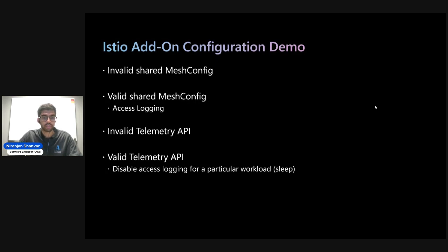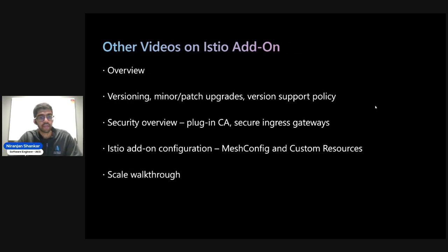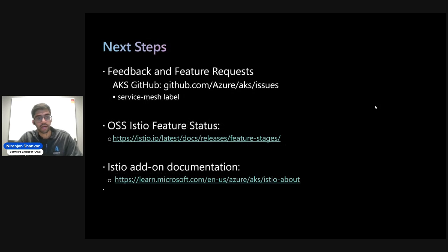That wraps up the quick demo and this video on Istio add-on mesh customization. I hope you found this helpful. Check out the other videos in our series on the AKS Community YouTube channel — including other Istio add-on videos — and we have several new features upcoming that we're excited to showcase. If you have feedback and feature requests about the add-on, please leave issues in the AKS GitHub repository with the service mesh label, which helps us track customer feature requests and prioritize internally.